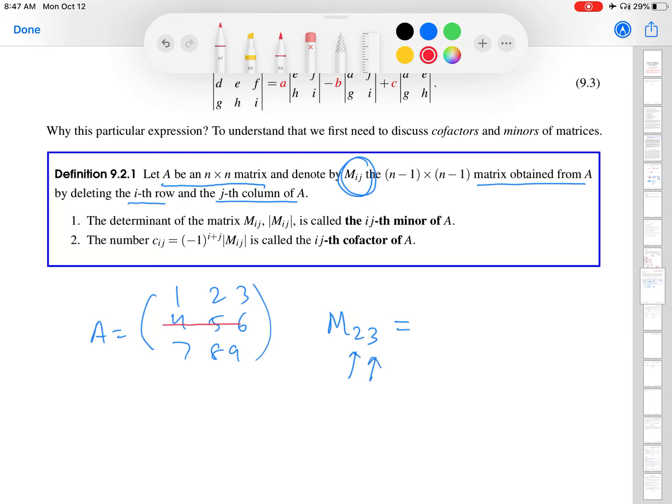So I'm going to go in here and get rid of the second row, get rid of the third column, and then write out the matrix that results: 1, 2, 7, 8.